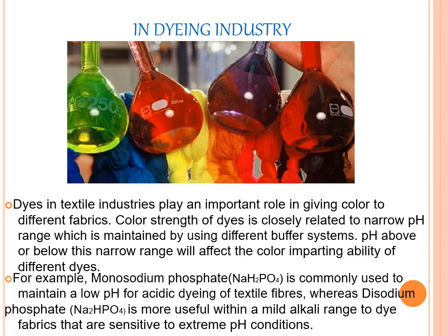For example, monosodium phosphate is commonly used to maintain a low pH for acidic dyeing of textile fibers, whereas disodium phosphate is more useful within a mild alkaline range to dye fabrics that are sensitive to extreme pH.